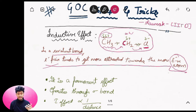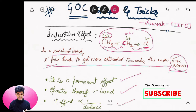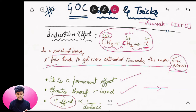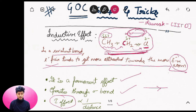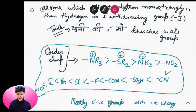If we talk about Inductive Effect, it is a permanent effect. First of all, it operates through a Sigma bond, through atoms. Now, there are two types of Inductive Effect: one is Plus-I Effect and one is Minus-I Effect.